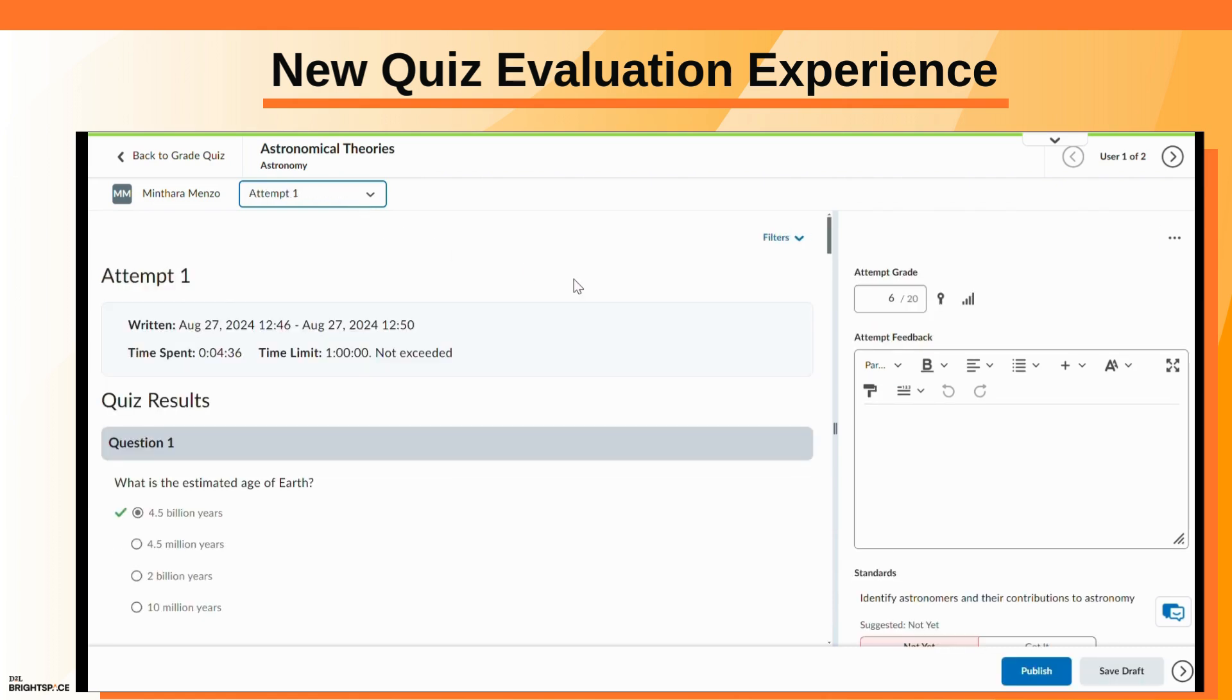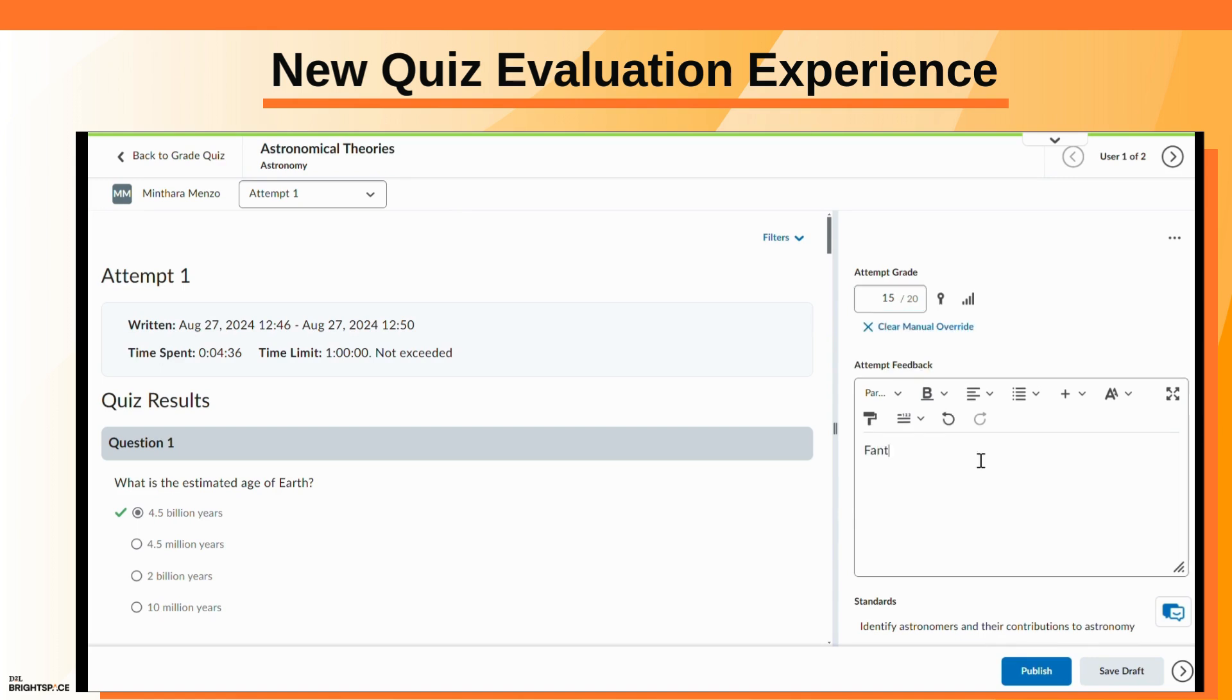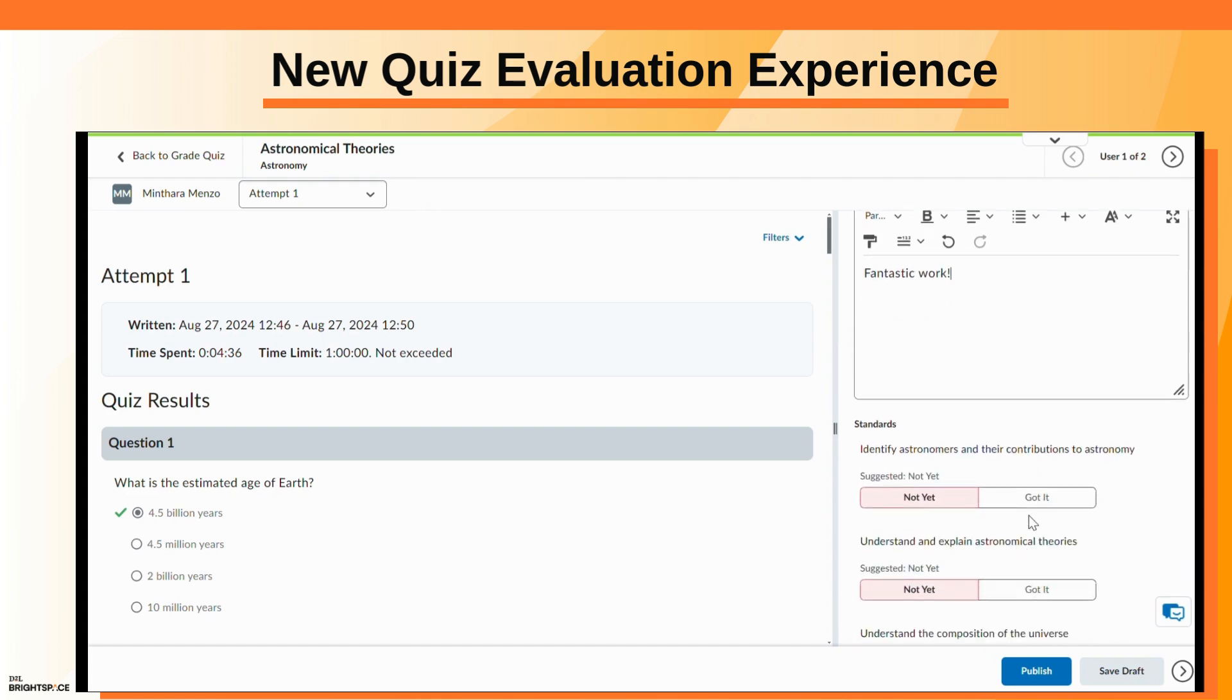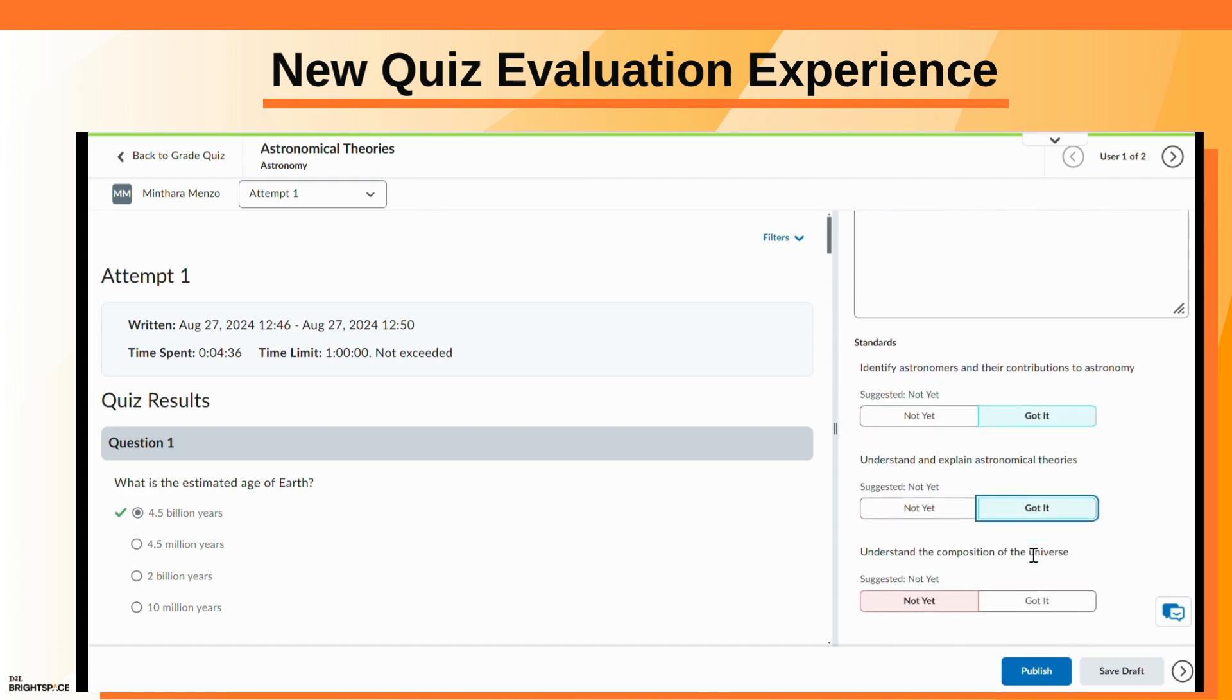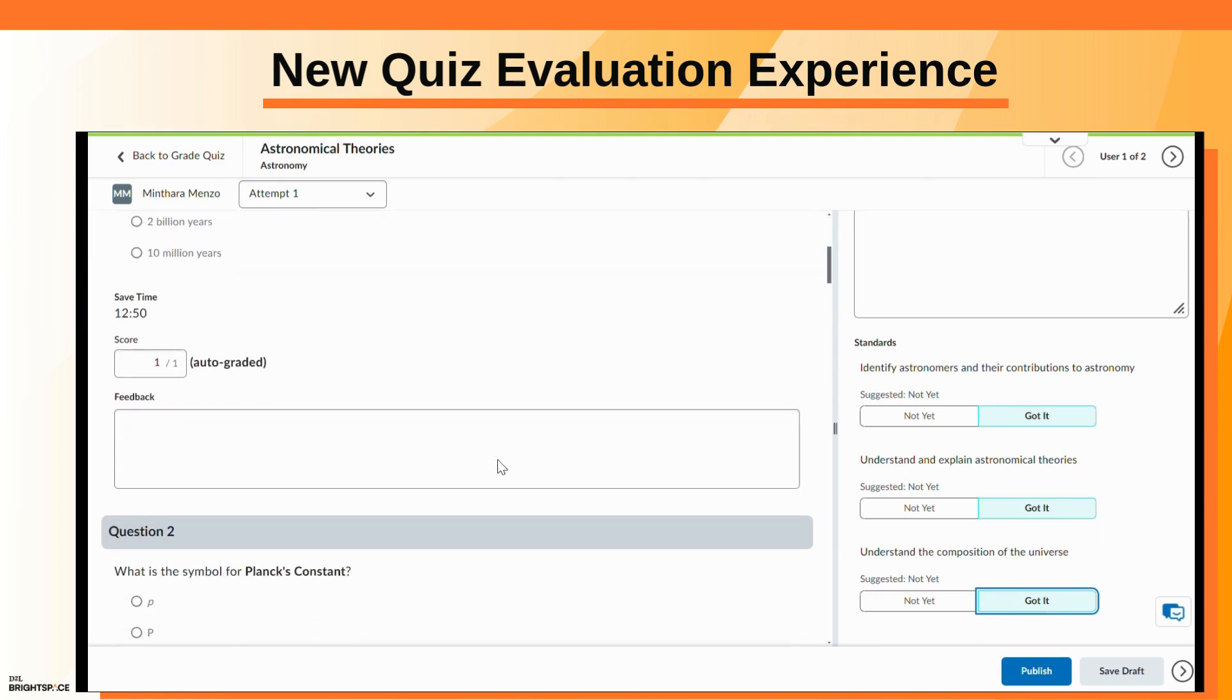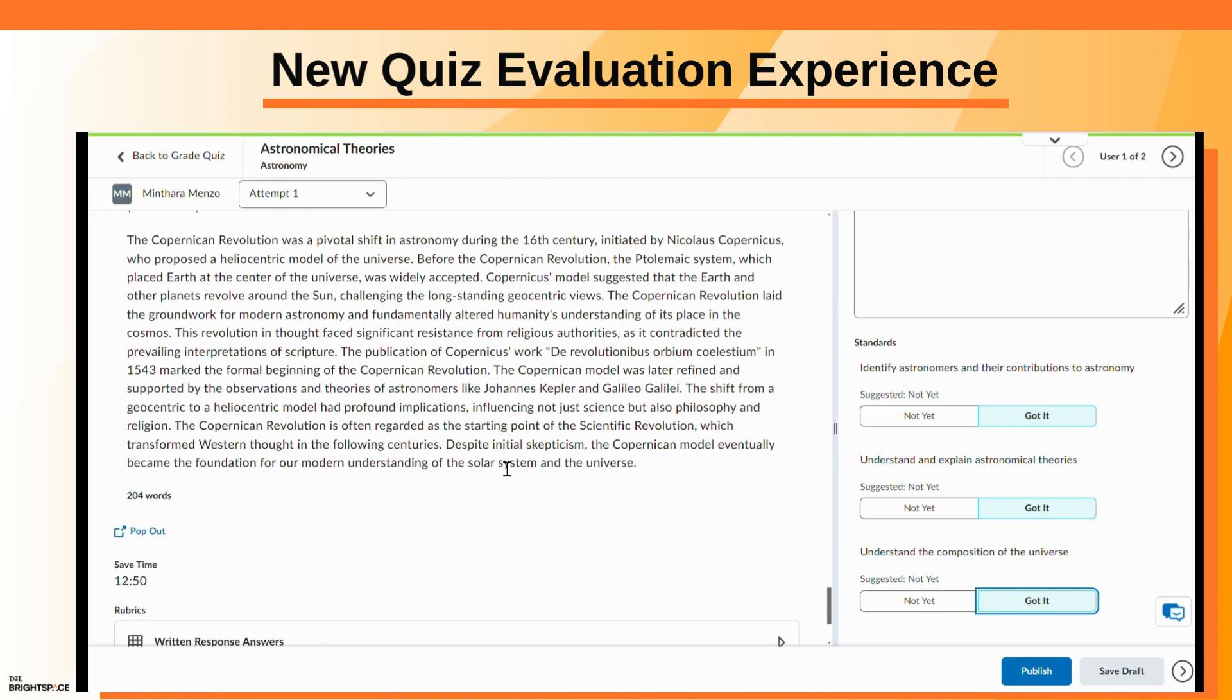The evaluation experience provides two panels for assessment. The right panel allows you to adjust or add an attempt grade and provide attempt feedback for the overall quiz. The left panel lets you adjust the score and provide feedback for each individual question.